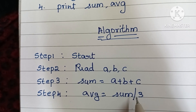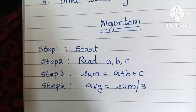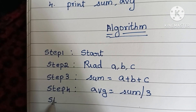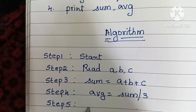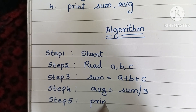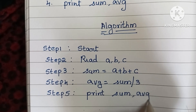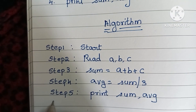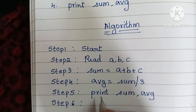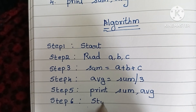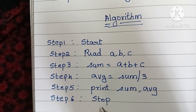Step 4: find average — avg is equal to sum divided by three. This is the formula to find the average of three numbers. Step 5: print sum and average. Step 6: stop the algorithm using a stop statement. An algorithm always starts with a start statement and ends with a stop statement.